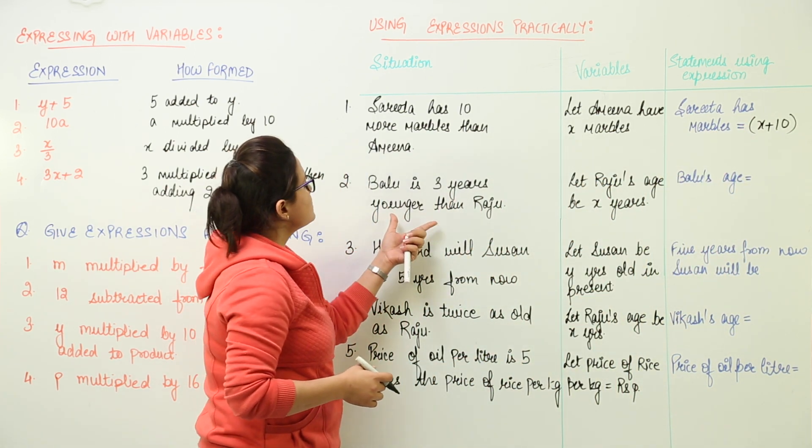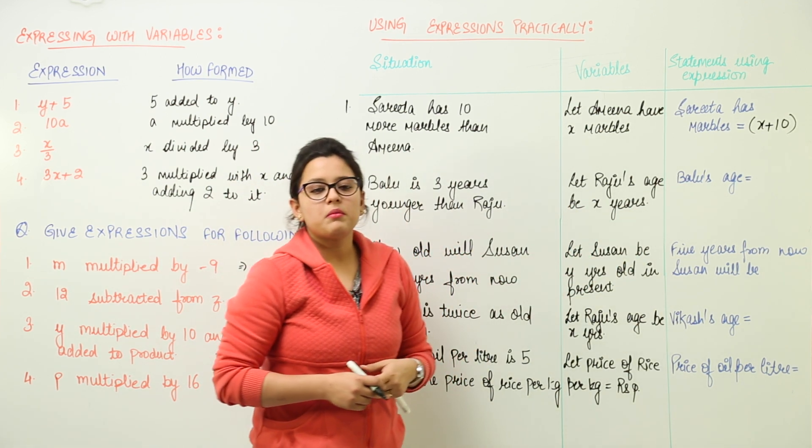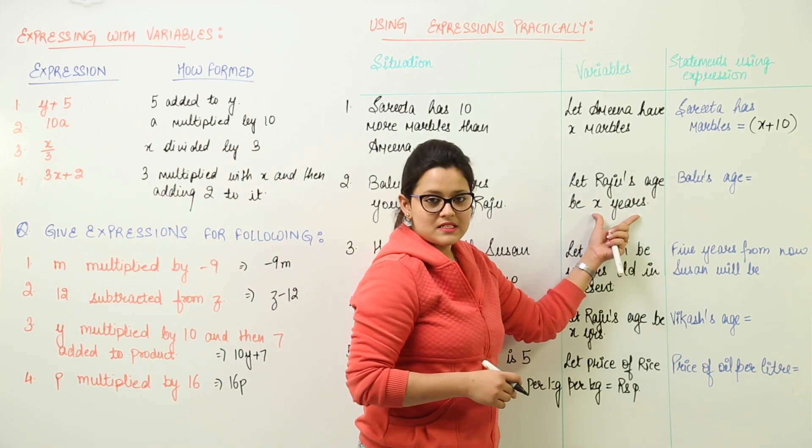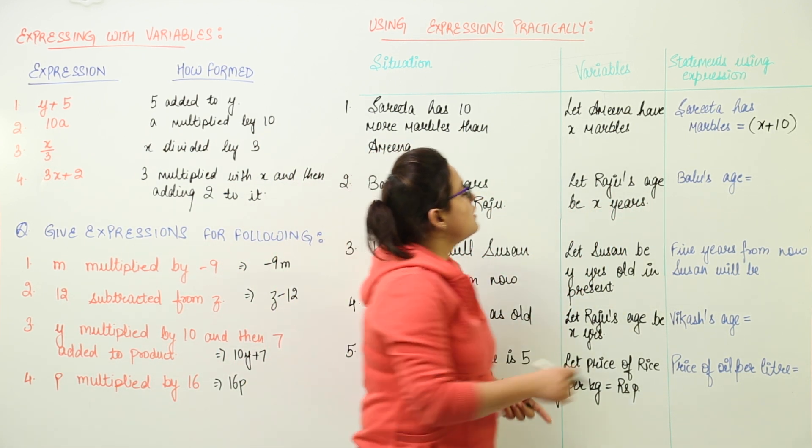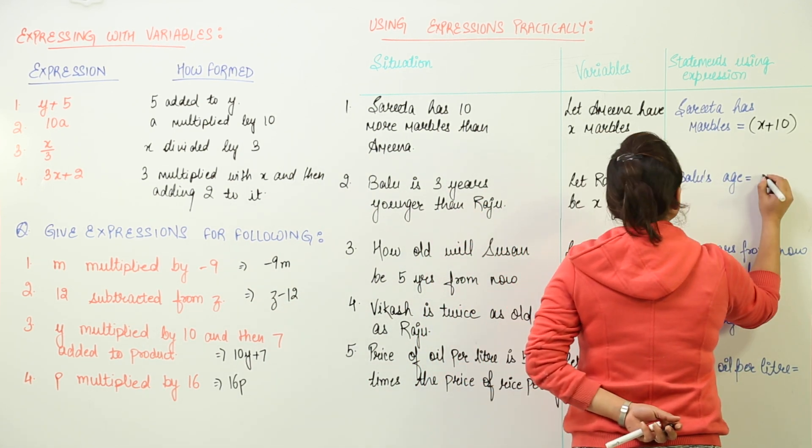The next situation is Balu is 3 years younger than Raju and we have to tell Balu's age. For this we would assume Raju's age to be x years and here we would have Balu's age would be 3 years younger. Now 3 years younger means